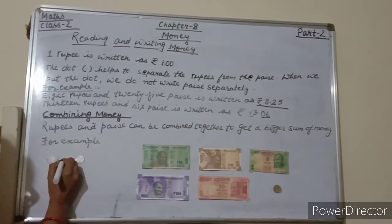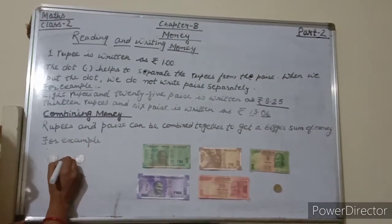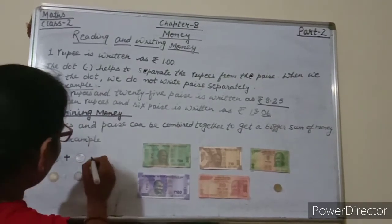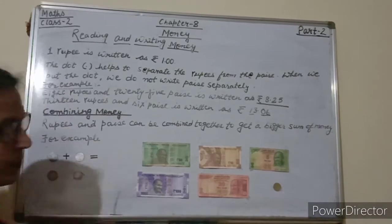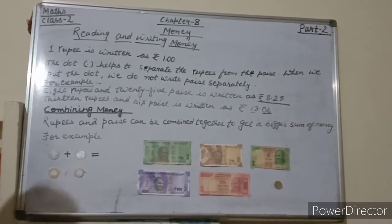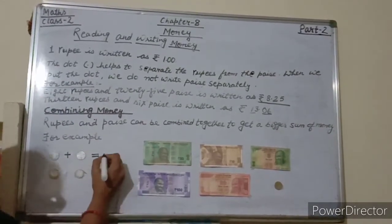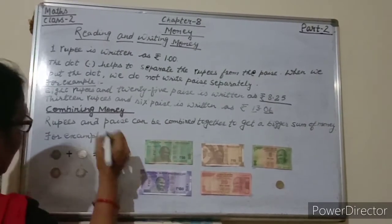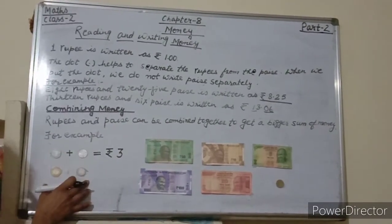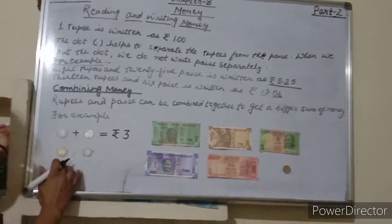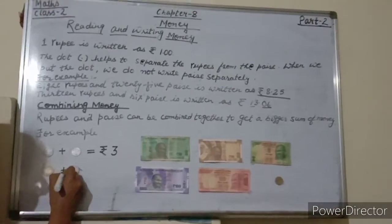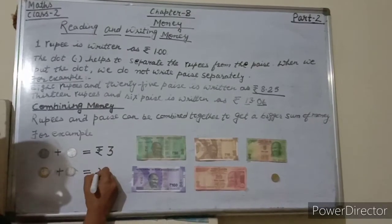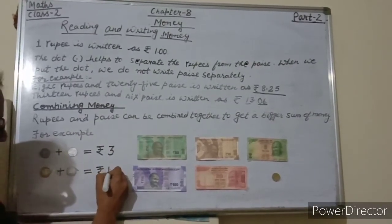So here, 1 rupee plus 2 rupees is equal to rupees 3. Again, combining: 10 rupees plus 5 rupees is equal to rupees 15.